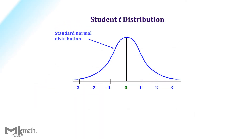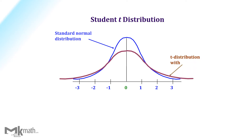Comparing to the standard normal distribution, the shape of t-distributions depends on the sample size. The t-distribution is used if we don't know the standard deviation of the population, sigma.